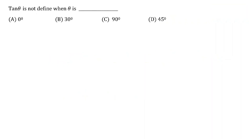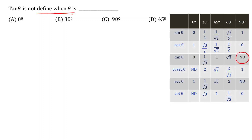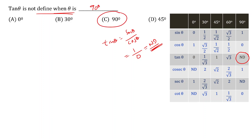Tan theta is not defined when theta equals 90 degrees. This is because tan theta equals sin theta by cos theta. At 90 degrees, sin theta equals 1 and cos theta equals 0, so we get 1 by 0, which is not defined — we cannot determine the value of 1 by 0. Therefore, at theta equals 90 degrees, tan theta is not defined, and choice C is the answer.